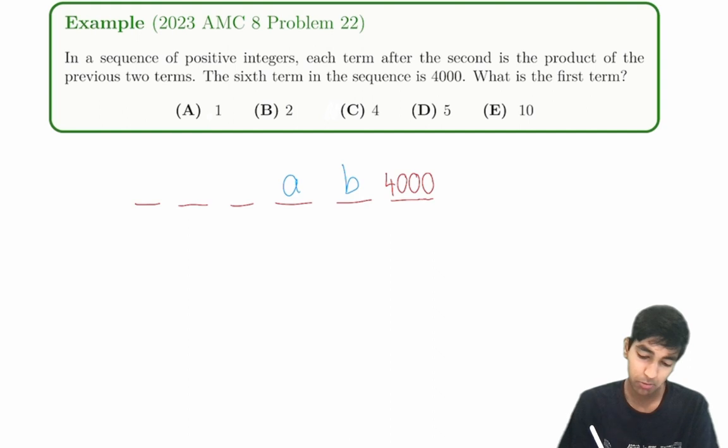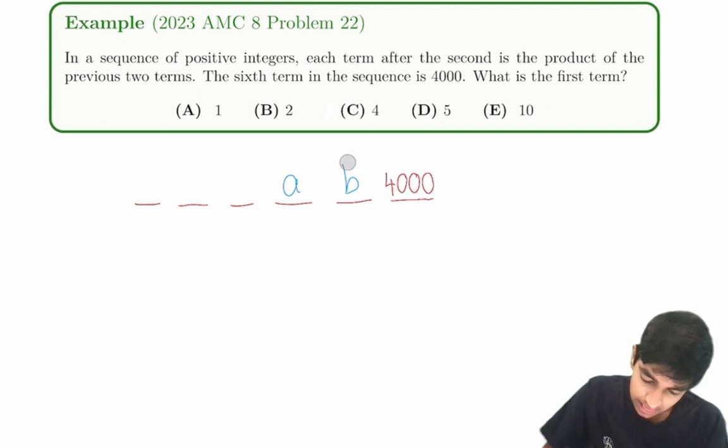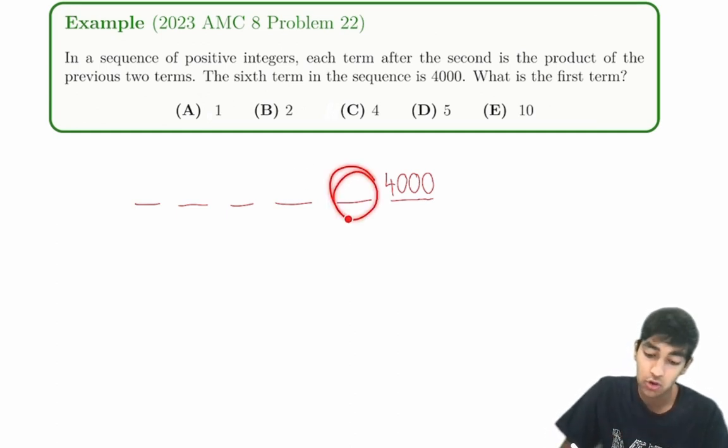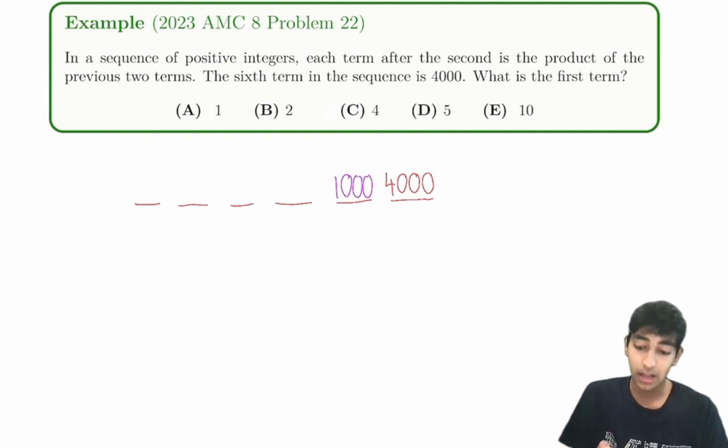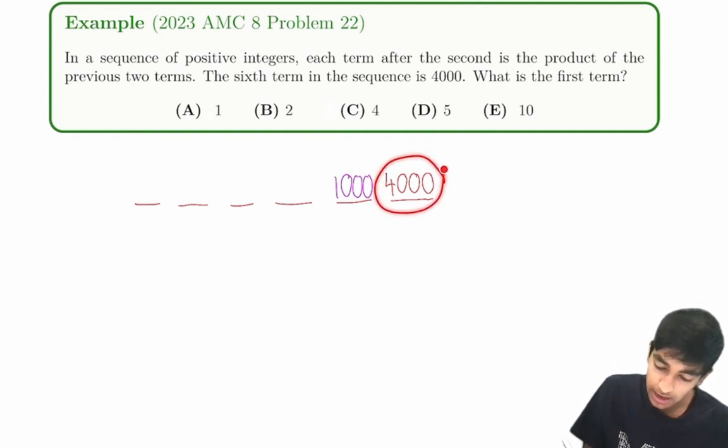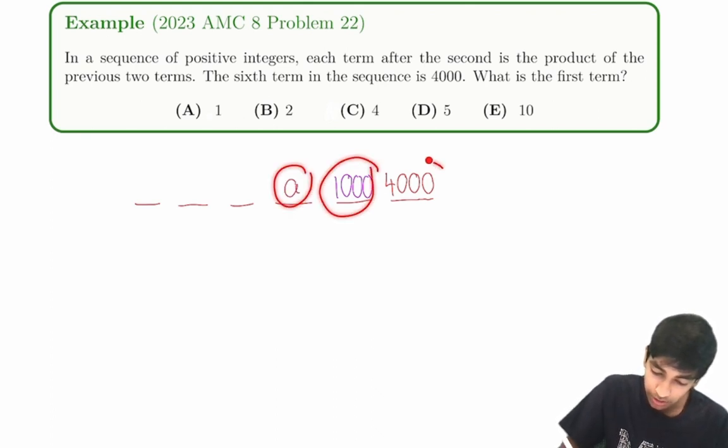But this is a little tricky here because we've got a few possibilities. Now, this is the real trick of the problem here. Let's say B was fixed. Let's say the problem gave us the value of B. Let's say they told us it was, I don't know, a thousand. If they told us this, then notice that because we have this number and this number, and we know that the product of two terms will be equal to the next term,